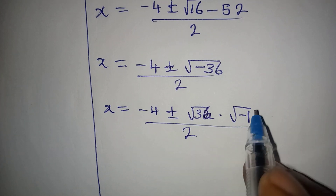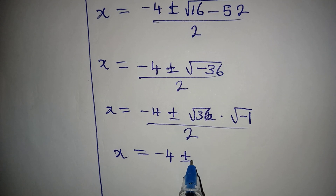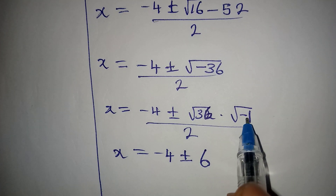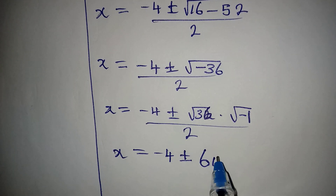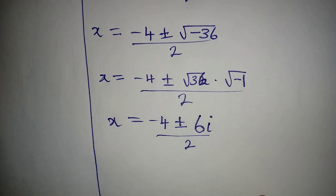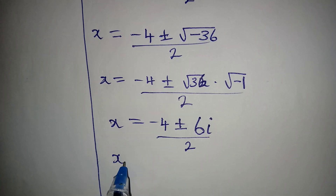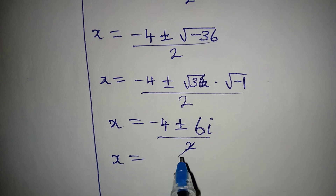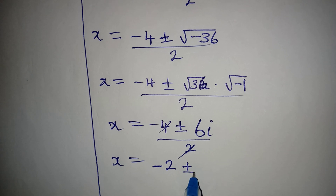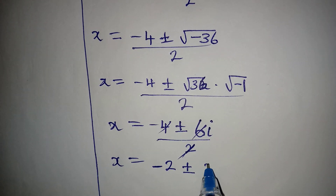Taking the square roots: √36 = 6 and √(-1) = i, so x = (-4 ± 6i) / 2. Dividing through by 2, we get x = -2 ± 3i.